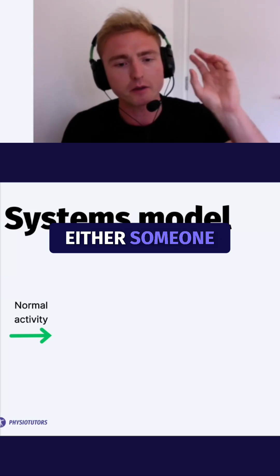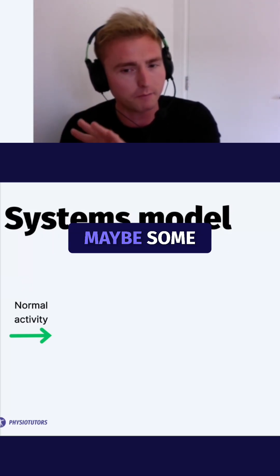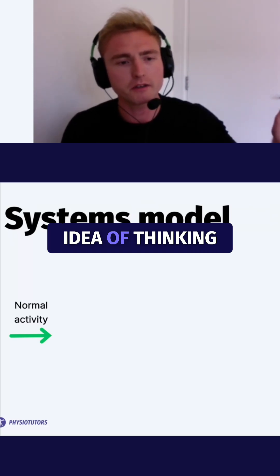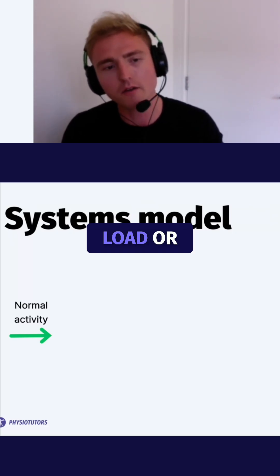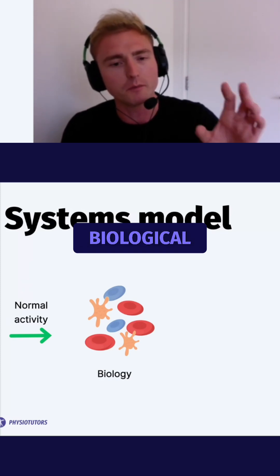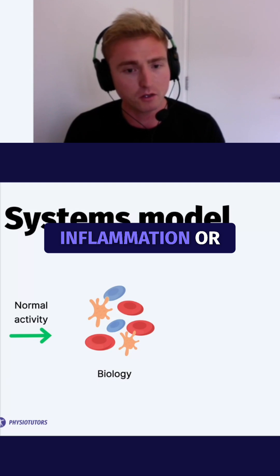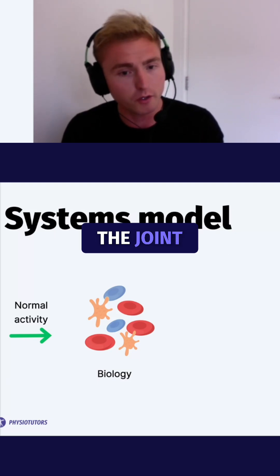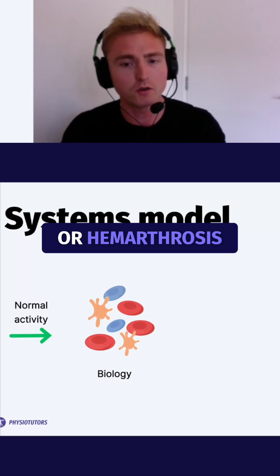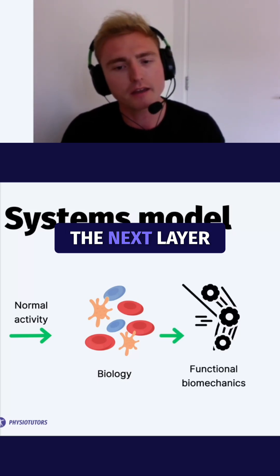This applies when we're seeing either someone who's high risk or someone who's got some early or evident osteoarthritis. The model describes the idea of thinking of our mechanical load or normal activity going through three stages. The first is biological factors — this includes systemic or local inflammation in the joint, so if you twisted your knee and it swells up, you get effusion or haemarthrosis, which alters the biology.